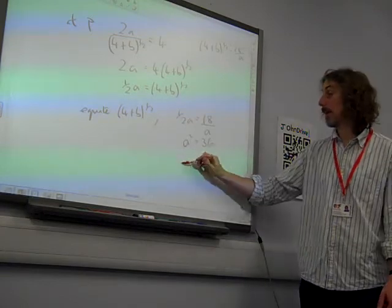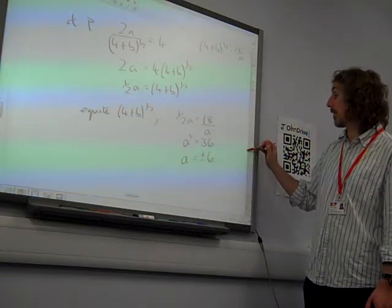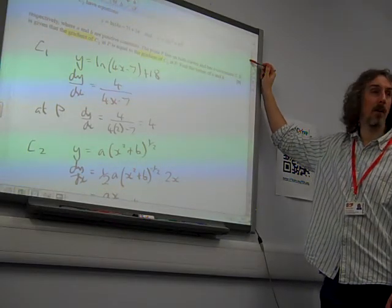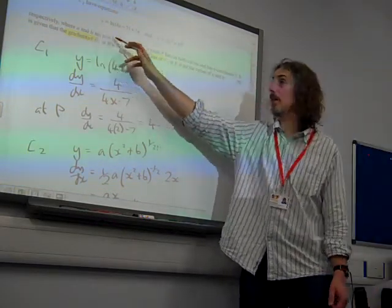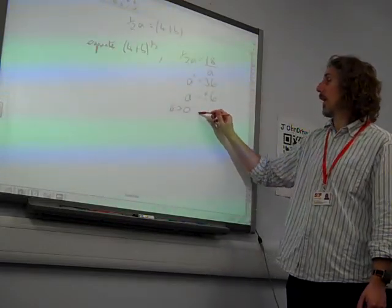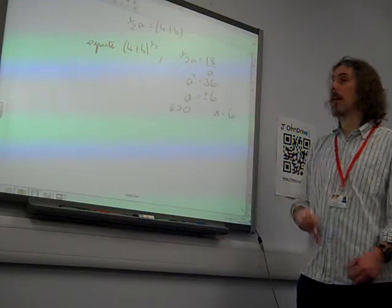So a is plus or minus 6. What did it say in the question? a and b are positive constants. There it is. a and b are positive constants. a greater than 0, therefore a equals 6.